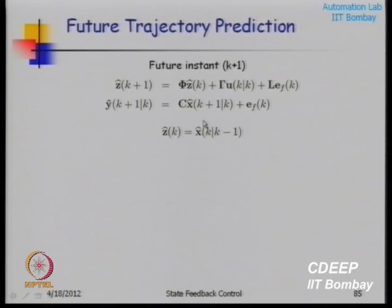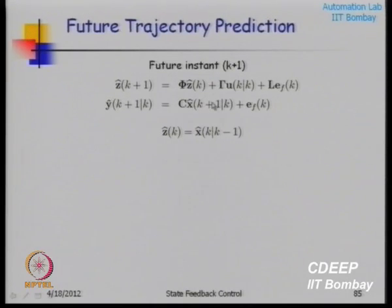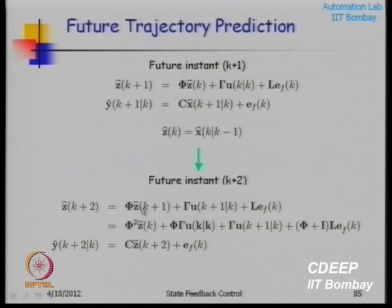With MPC you are solving using formal mathematical techniques. You can constrain delta U as well — the rate of change of input. The objective function of constrained MPC has three terms: the first is the distance of predicted output from the set point trajectory (sum of squared errors weighted by W); the second is a terminal state term at point k+p; and the third is input move weighting to penalize large moves.